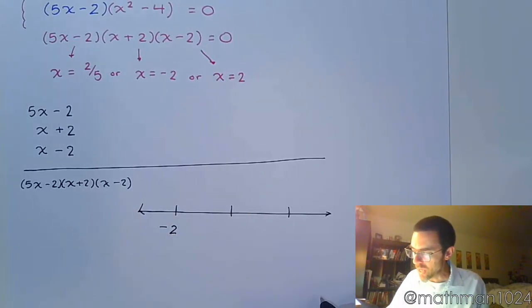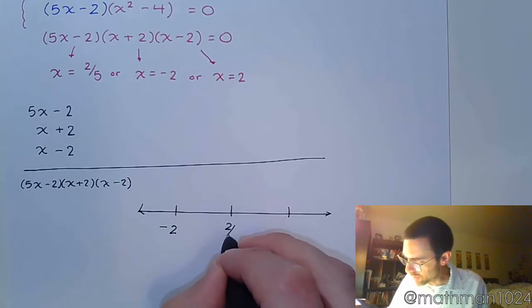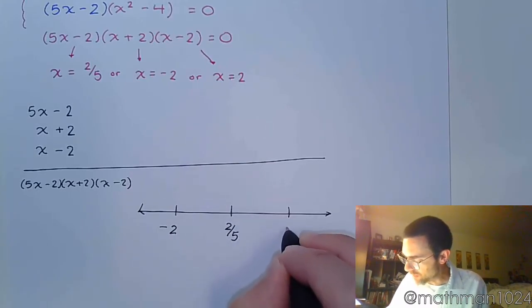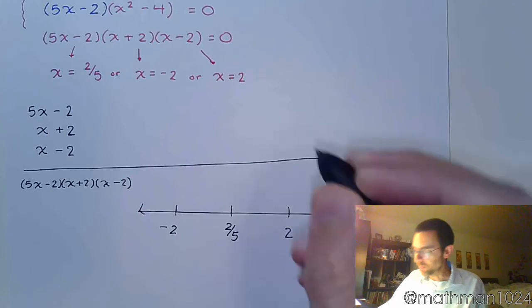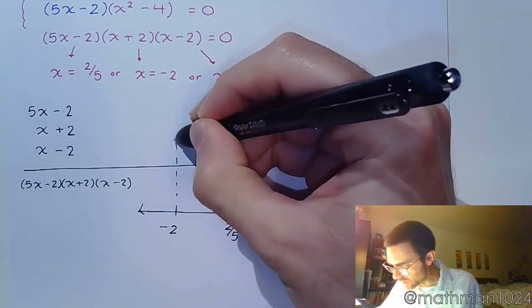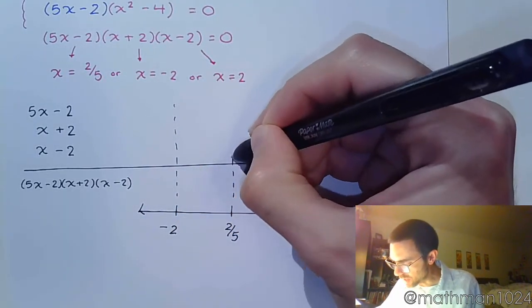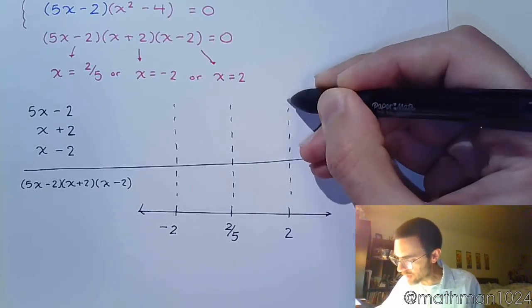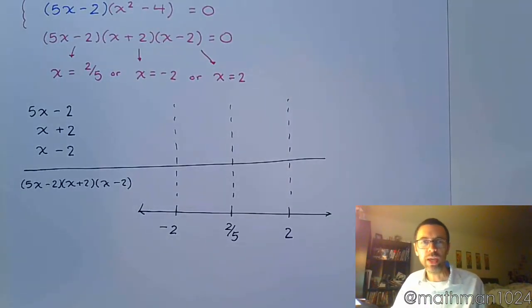And then we have a positive 2/5, and then positive 2. So we make our dashed lines going up here to create our different sections, our different intervals.